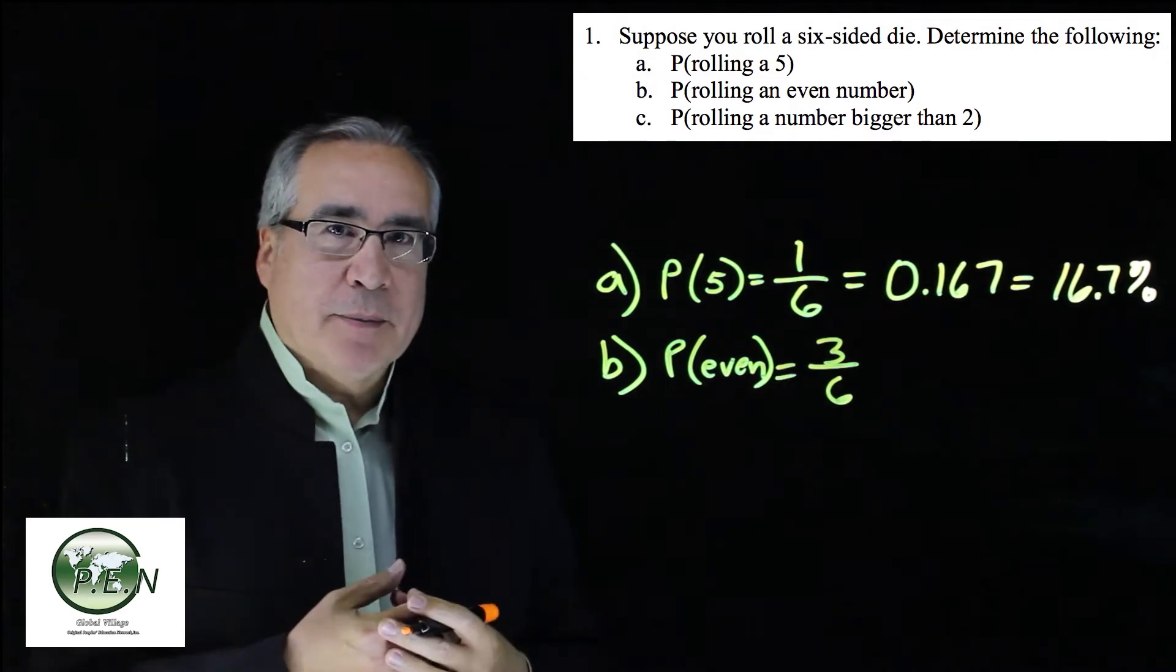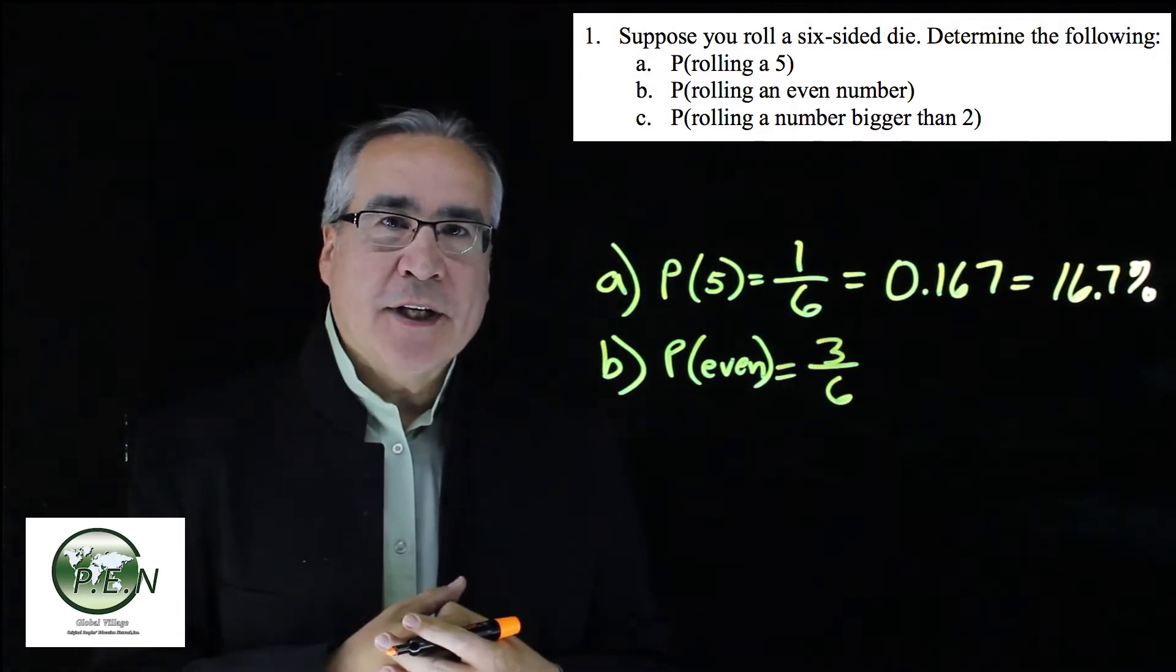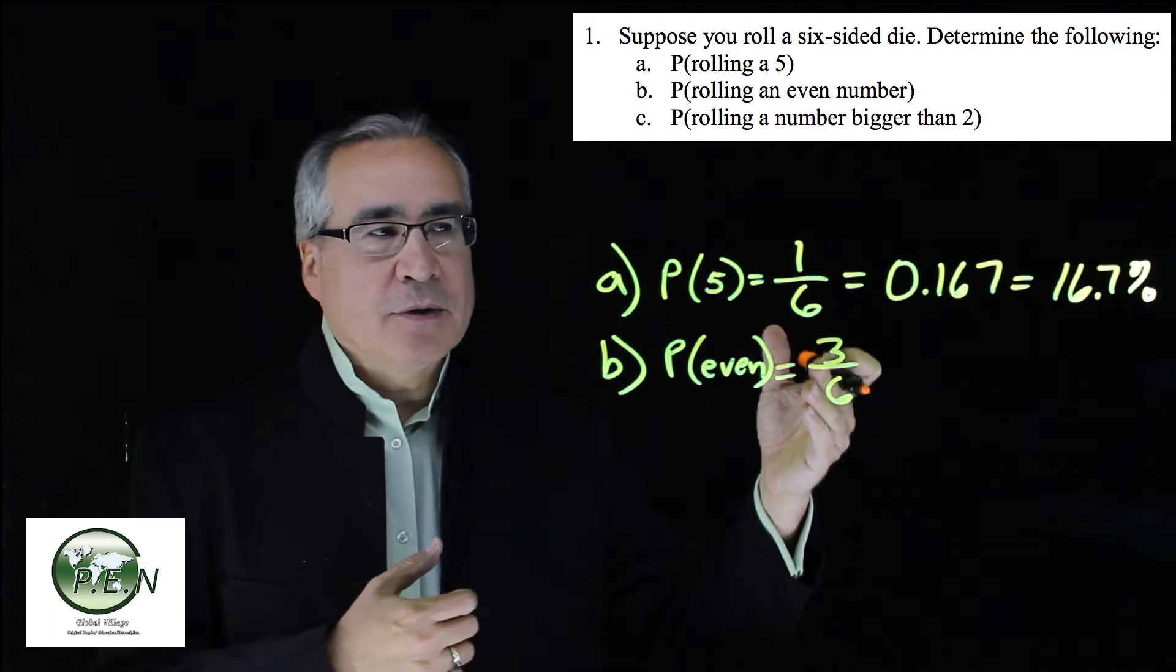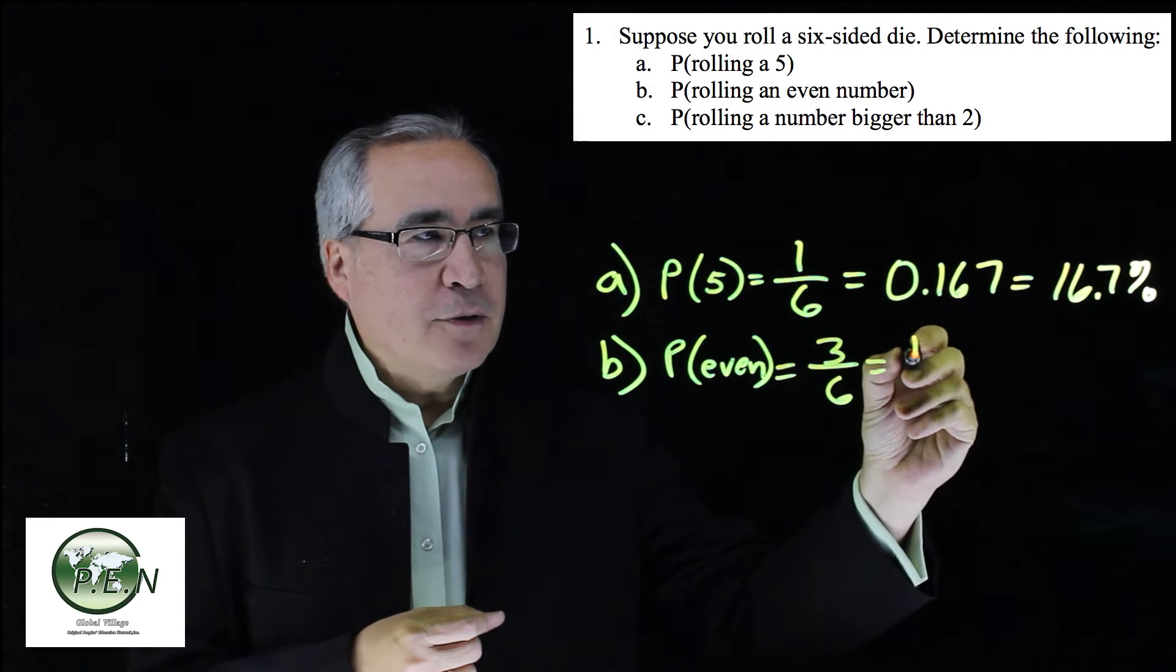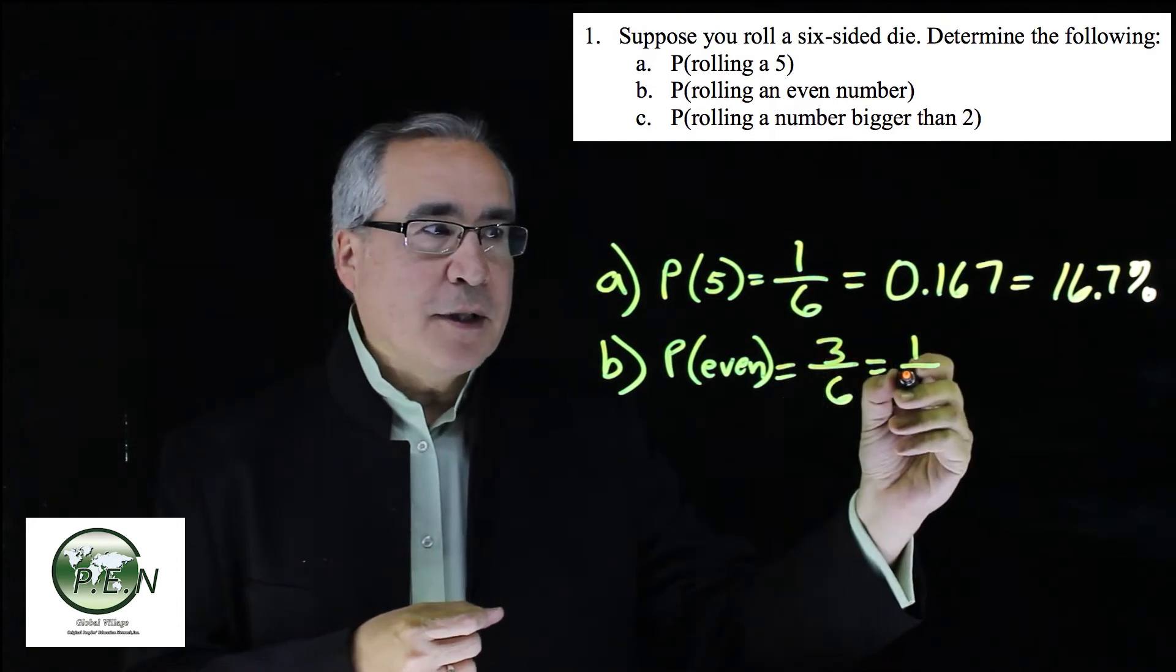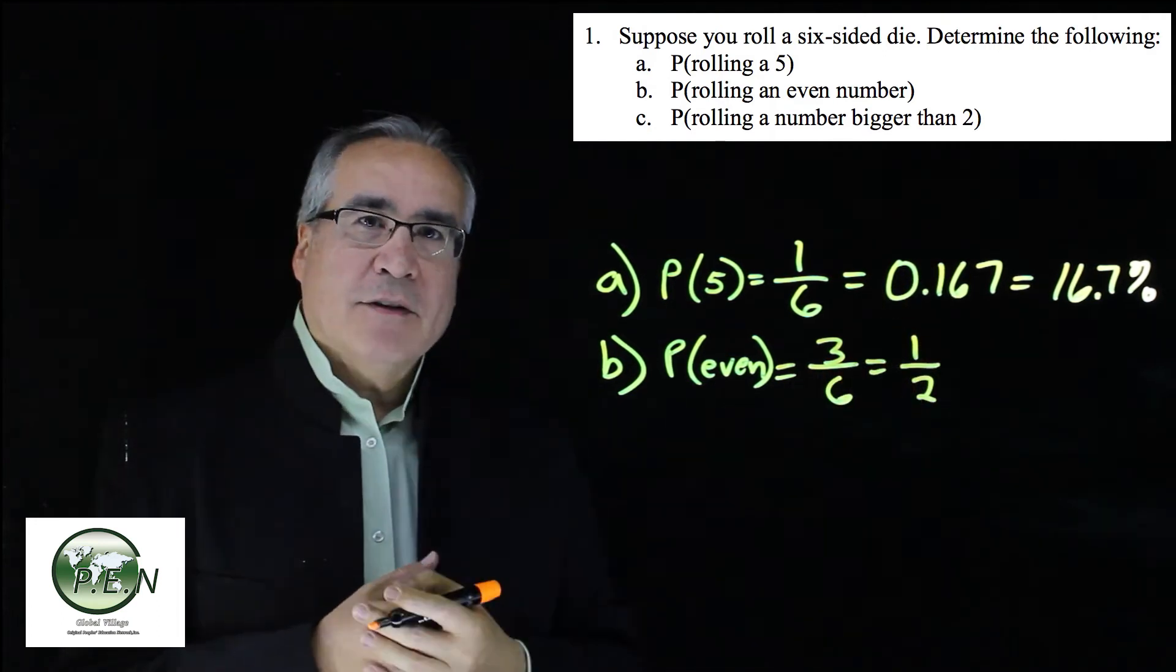So three sixths is our probability. However, you won't see this as an answer because it can be reduced because the top and bottom have a common factor of three. Three divided by three is one. Six divided by three is two. So you'll see the answer of 1 half.